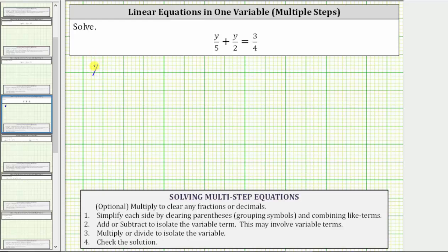So the given equation is y over 5 plus y over 2 equals 3 fourths. The first step is to simplify the left side of the equation. Notice how both of these terms are y terms, which means we can add them or combine them, but we do have to first obtain a common denominator.